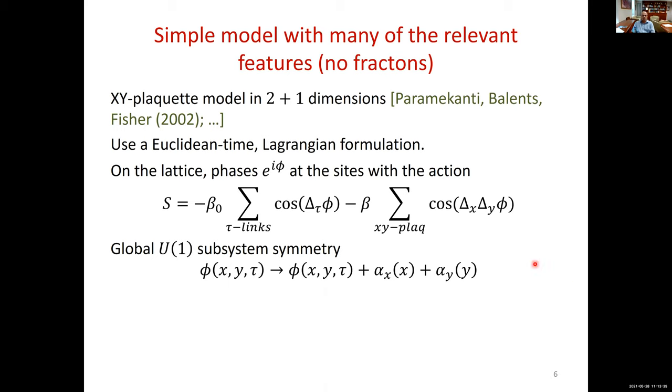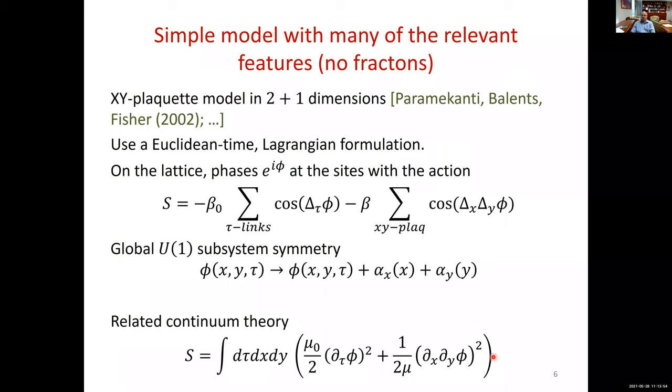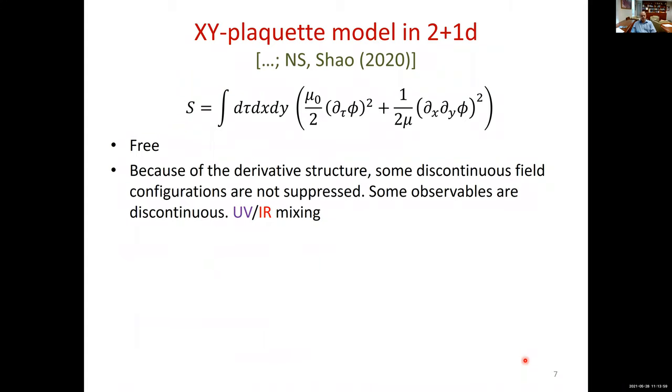So this lattice model is well defined. You can put it in the computer and do Monte Carlo or whatever numerical scheme you like and just get the answer. It is characterized by the following subsystem global symmetry: we can shift phi by an arbitrary function of X plus an arbitrary function of Y. You can check that this action remains invariant. I emphasize again, this is a global symmetry, not a gauge symmetry. If we had tau dependence here and here, it would have been a gauge symmetry, but that is not a symmetry of this model. So we have no time dependence, and therefore this is a global symmetry. And these authors also wrote a continuum model of it which is very straightforward. Just follow your nose. This term is the time derivative, this is a double space derivative, and this is the action in Euclidean space.